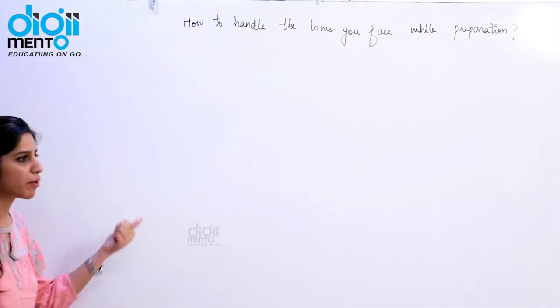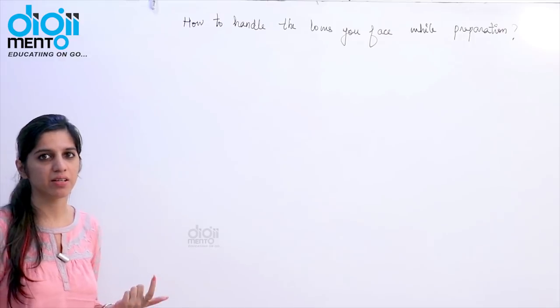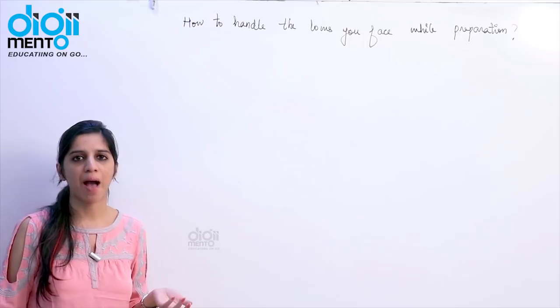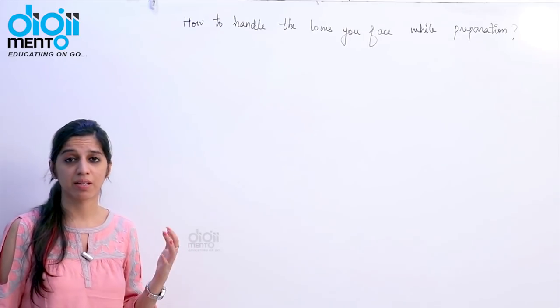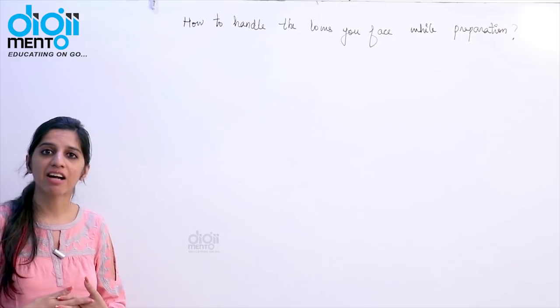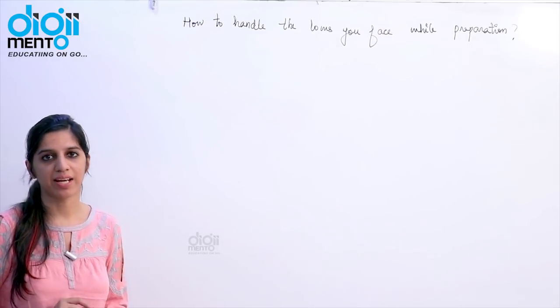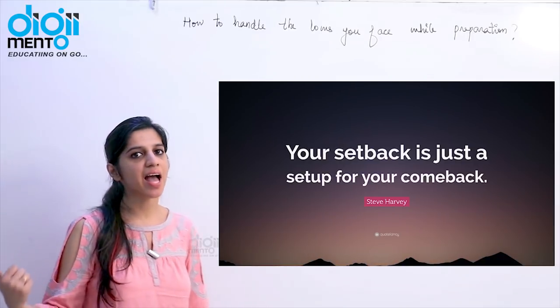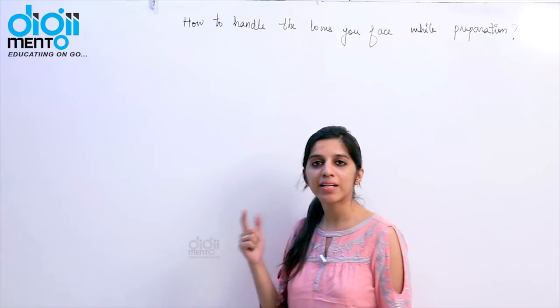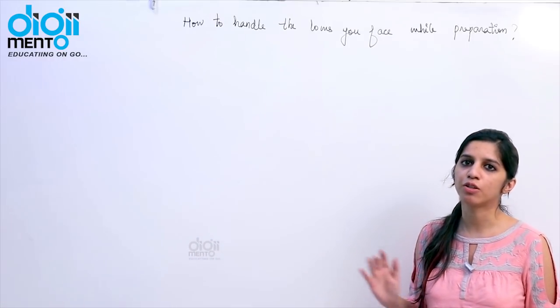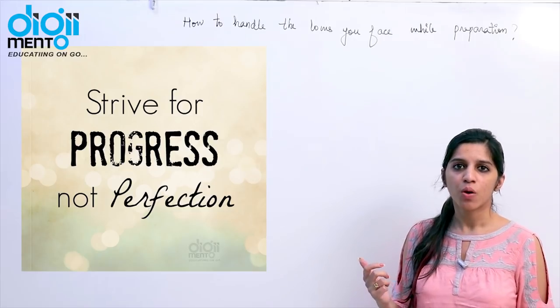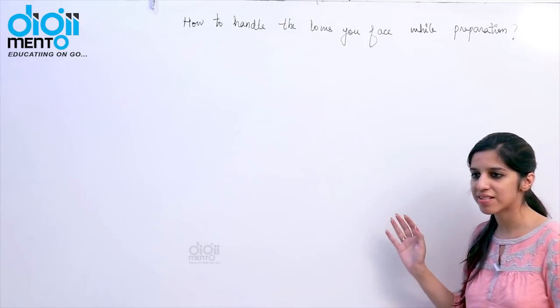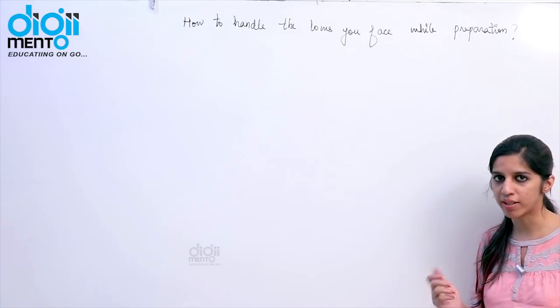See what happens is this preparation takes, normally it takes an year or two, right, average for an average student. Most times what happens to students is they get sick, they get infected with some severe disease. And they start feeling like now everything is finished. It is not like that. It is about you. It is about how you rebound. Everybody has to rebound. Everybody does rebound. But it depends on what time you are taking to rebound and with what energy you rebound. If that is okay, you are going to succeed.